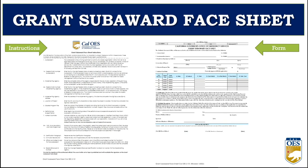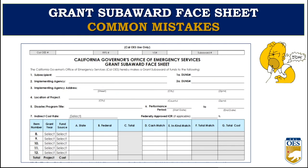Let's start with the grant subaward face sheet. The most common mistakes include: the last four digits of the zip code are often missing — go to the US Postal Service website to look up your plus-four. The disaster/program title needs to match the name of the program you are applying for, as found in the RFP. For example, if applying to the Listos California Tribal Grant LI program, write that on line 5. Indirect cost rates do not apply for this state-funded grant — you can write NA for not applicable.